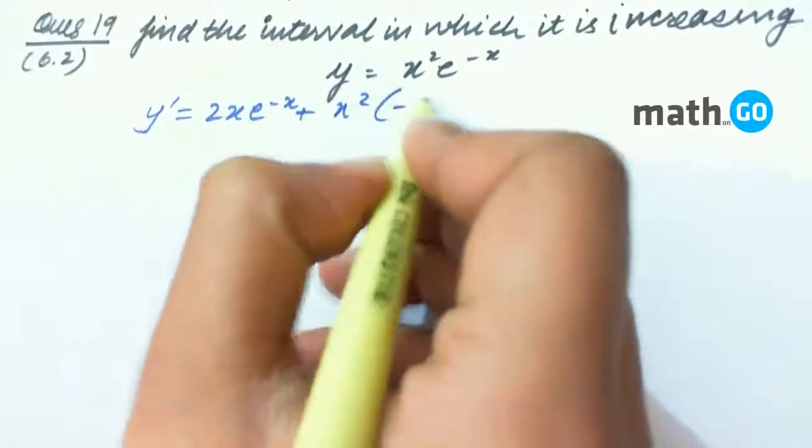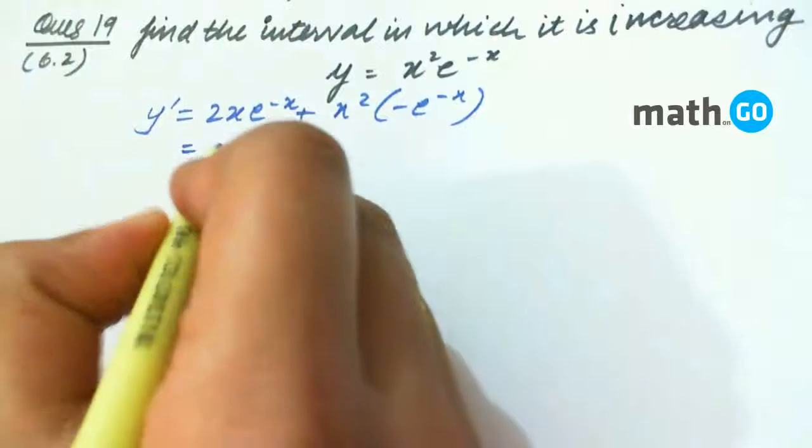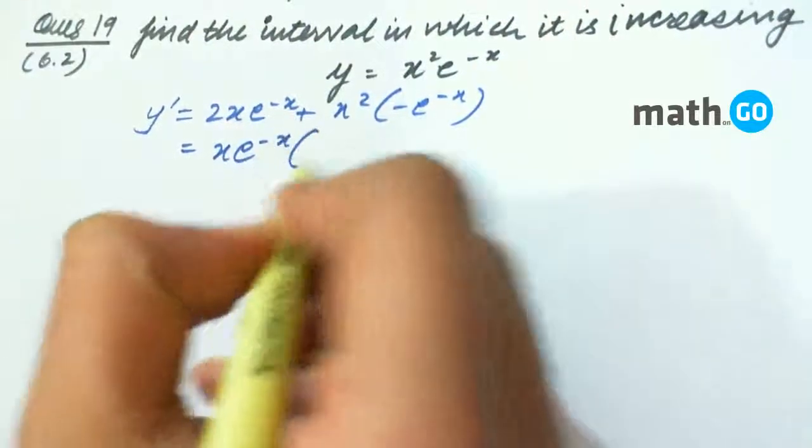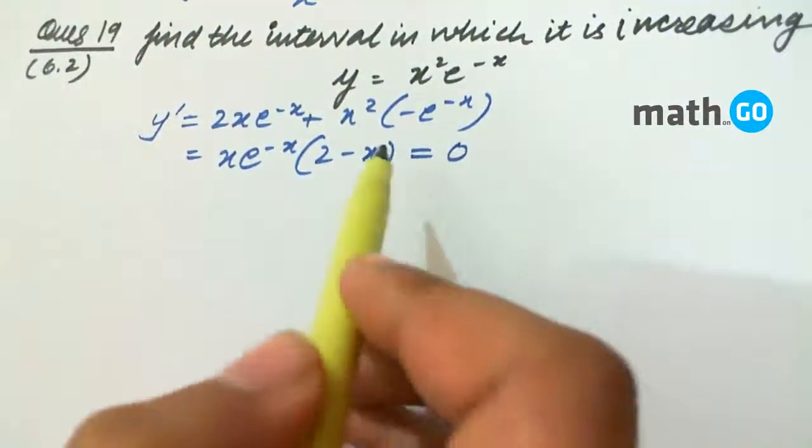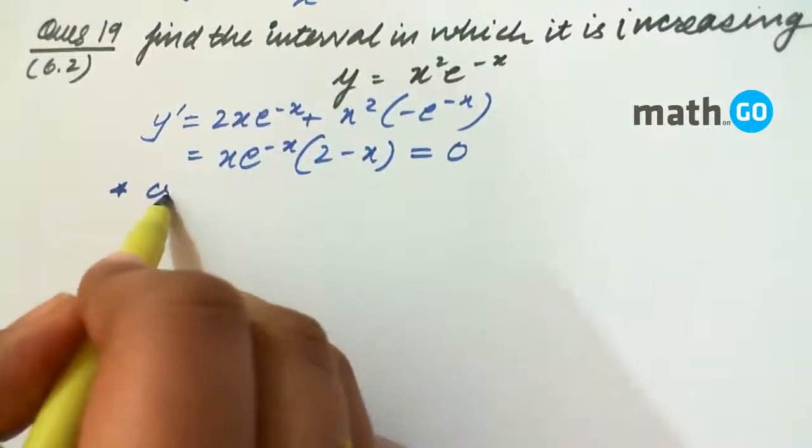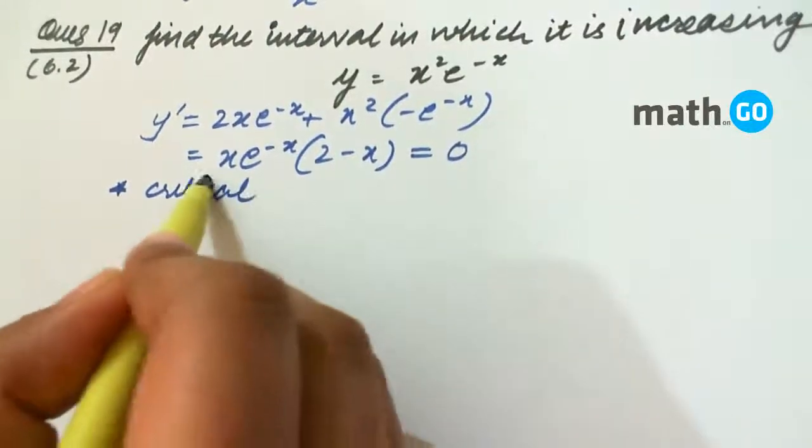That is nothing but x*e^(-x)*(2-x). As usual, we keep it equal to 0 to get the critical points.